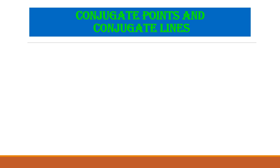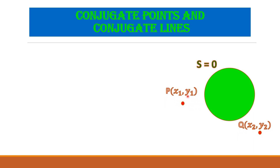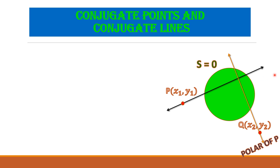Now we go to the definition of conjugate points and conjugate lines. First of all, we observe the diagram. Let s=0 be the circle, and the points P(x₁, y₁) and Q(x₂, y₂) are any two points on the plane. Here we take the points as external to the circle s=0, and this is the polar of the point P(x₁, y₁) and this is also the polar of the point Q(x₂, y₂).